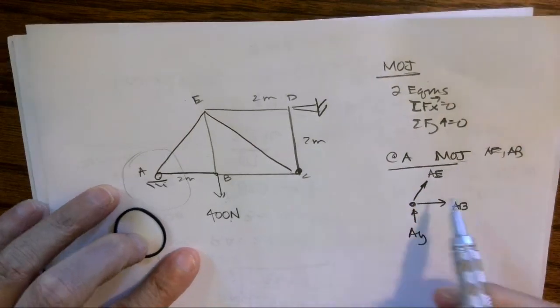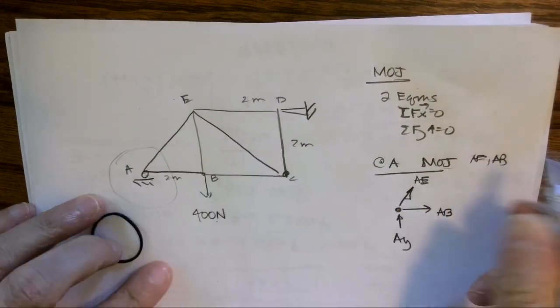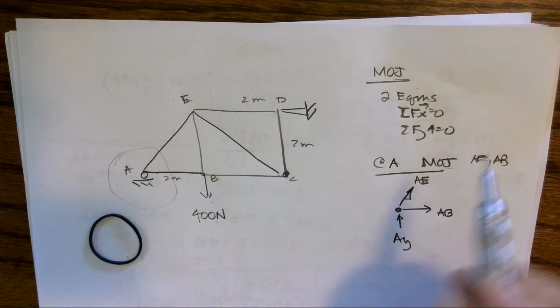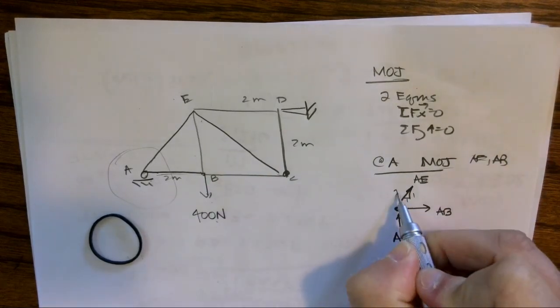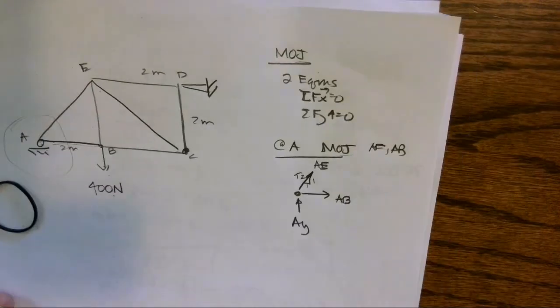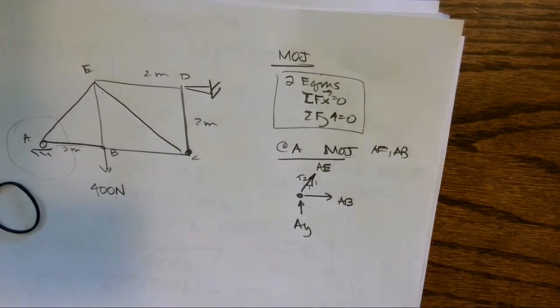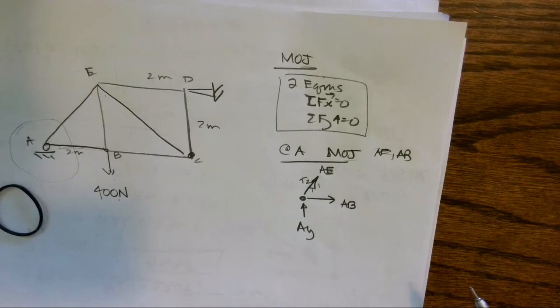And the next thing I need to do is notice this is at a slant. They didn't give me the angle, but I do have a two-two, so that means it's a one-one-square root of two. Because I only have two equations to use for this, I can only have two unknowns.